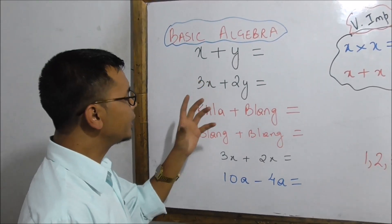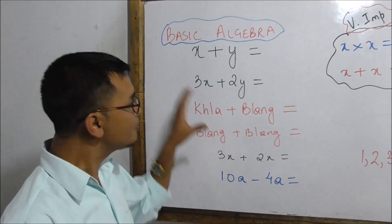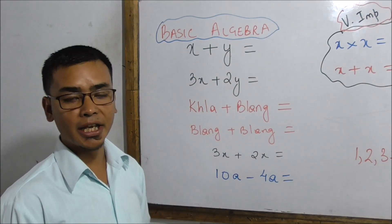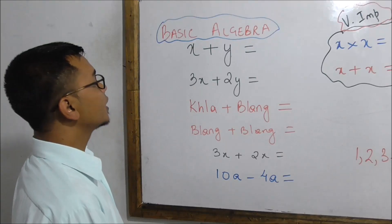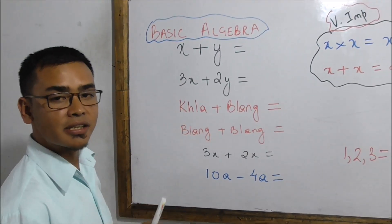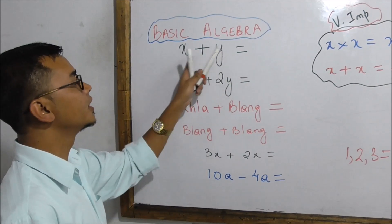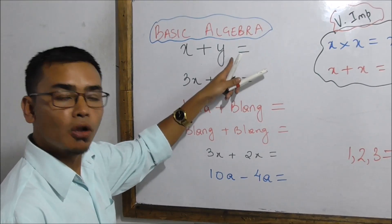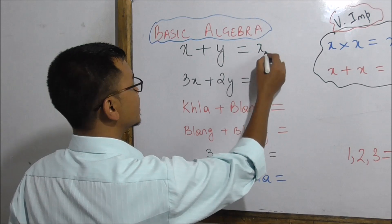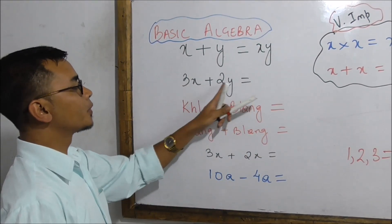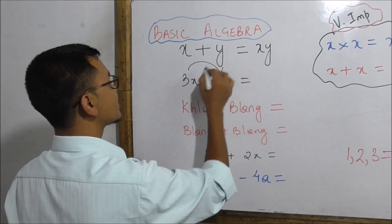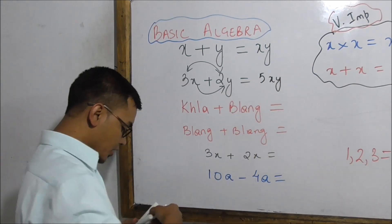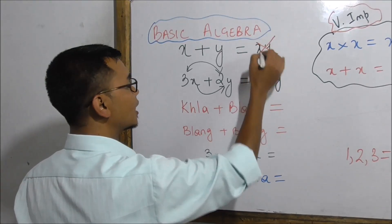We will talk about basic algebra. X plus Y is a simple algebra. For example, 3X plus 2Y equals 5XY. We will talk about 5X and 5XY.